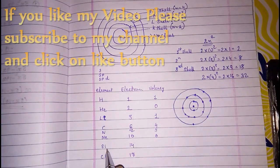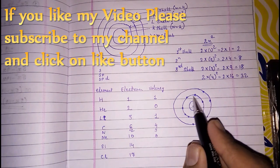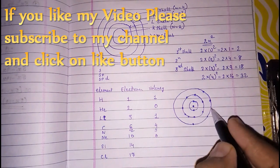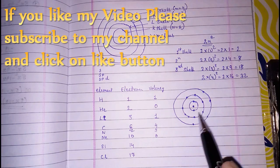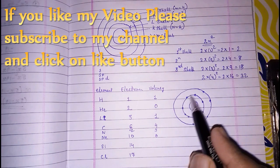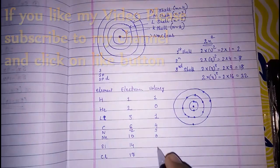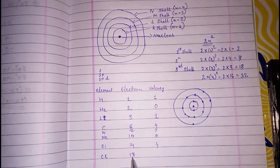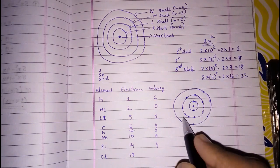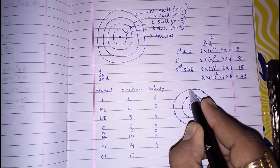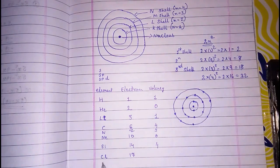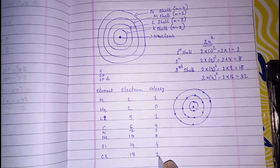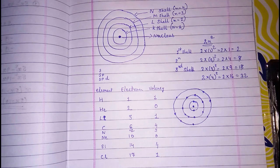So for silicon 14: first two, then eight, then four remaining. Either it loses four or gains four, so the valency of silicon is four. For chlorine 17: two, then eight, then seven in the outer shell. Either it gives away seven or gains one — gaining one is easier. So the valency of chlorine is one. Thank you friends for watching. If you like this video, please subscribe to my channel.